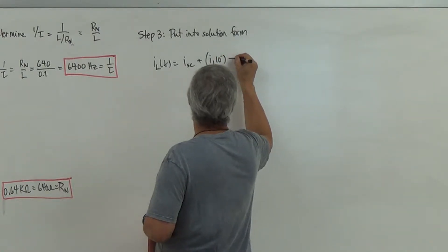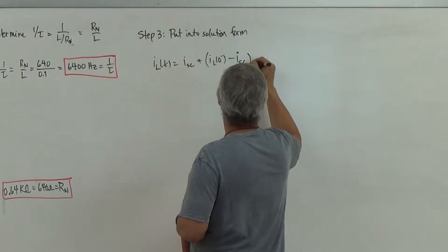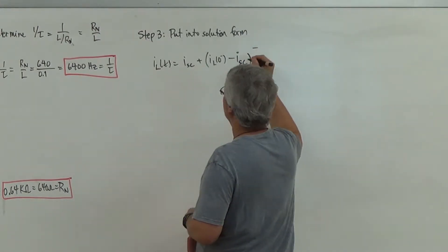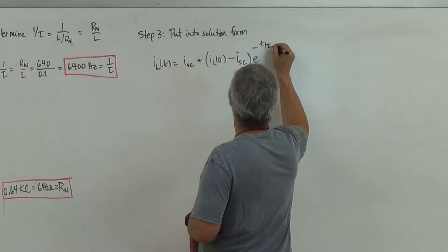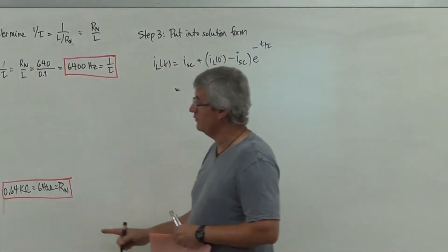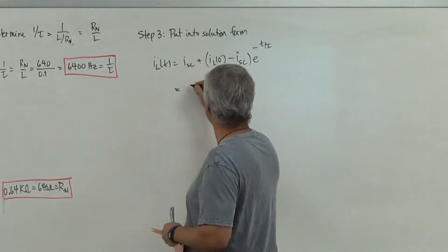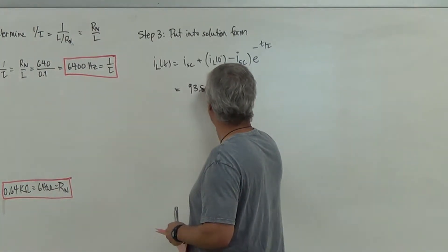5L of 0 minus, minus I short circuit, E to the minus T over tau. So when I write this out here, I short circuit, the problem was 93.8 milliamps. So I get 93.8.